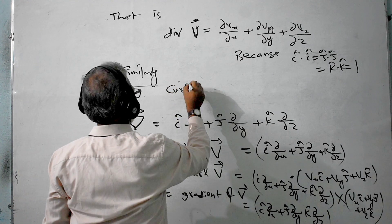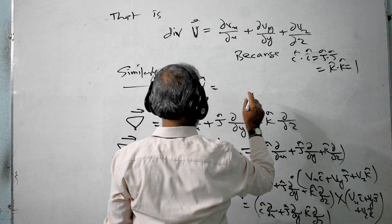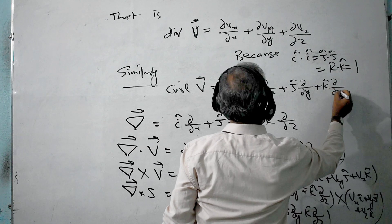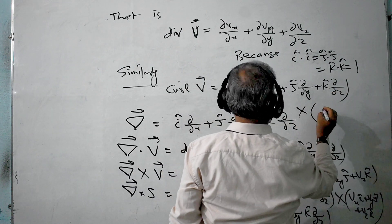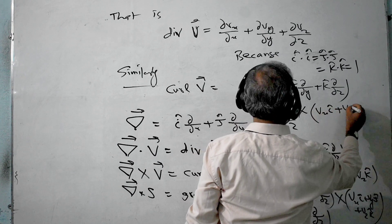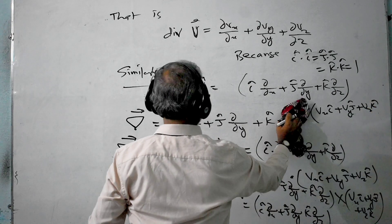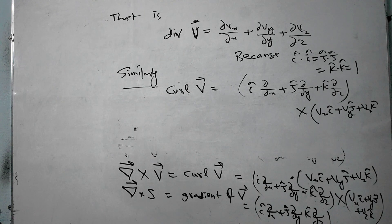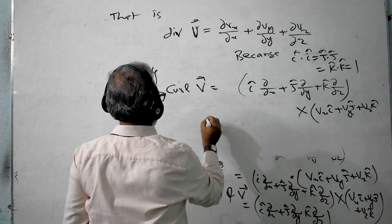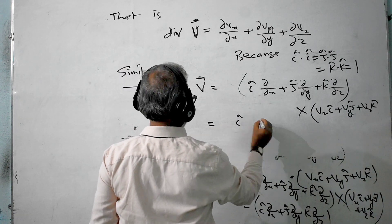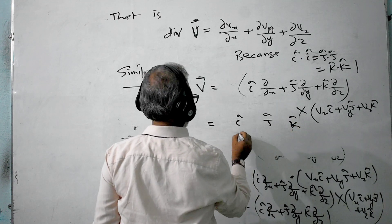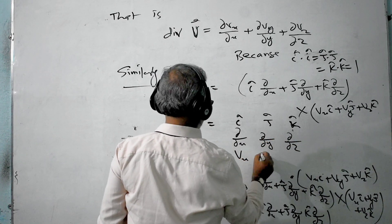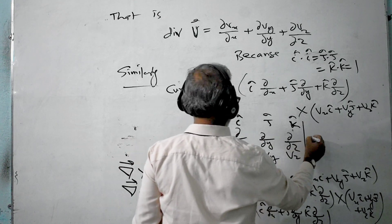Curl of V equals: (i·∂/∂x + j·∂/∂y + k·∂/∂z) cross (Vx·i + Vy·j + Vz·k). This is computed using the determinant form with rows: [i, j, k], [∂/∂x, ∂/∂y, ∂/∂z], and [Vx, Vy, Vz].